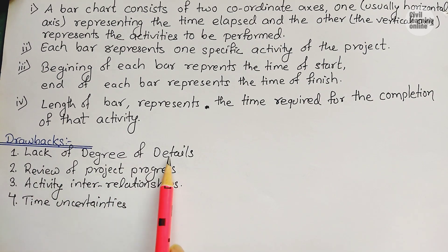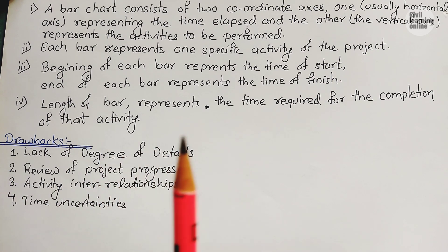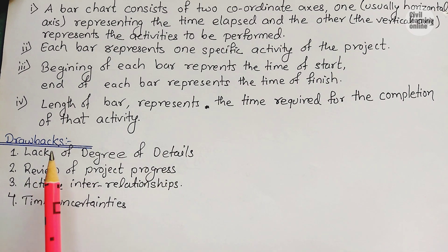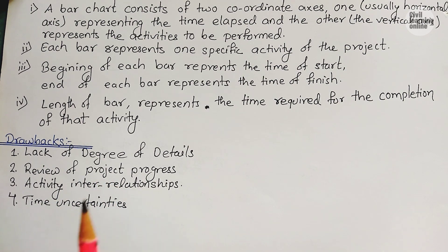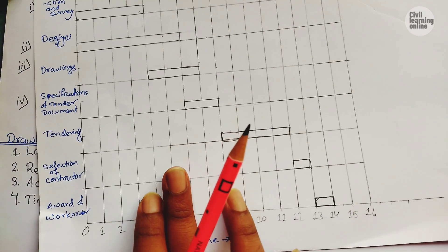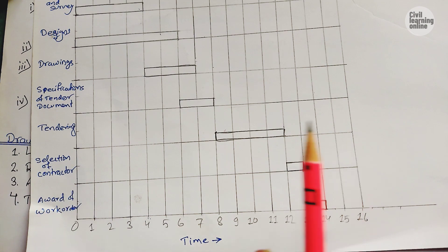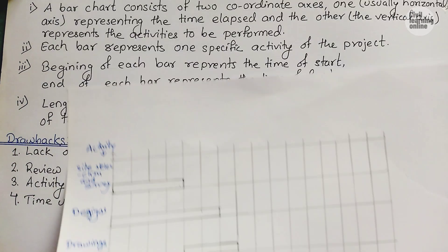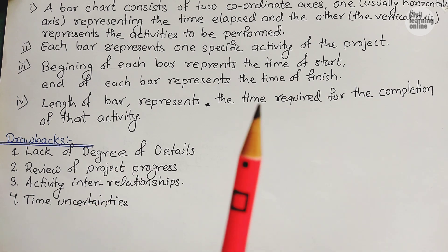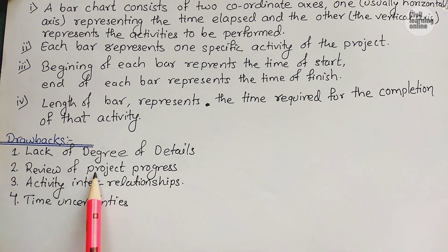Now the drawbacks of a bar chart. First, it has a lack of degree of detail — bar chart only represents major activities; minor activities are not included, so it lacks detail. Second is the review of project progress: if we allocate 4 weeks for site selection and survey, at the end of 4 weeks we may find only 2 weeks worth of work was completed, but we have no way to track this — it lacks the ability to review project progress.